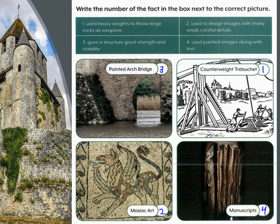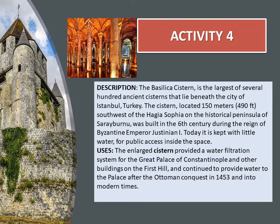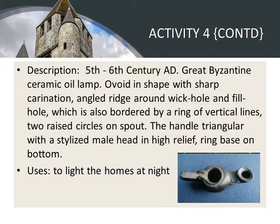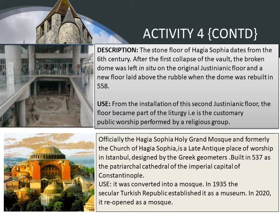Next, you have to write down the number. The pointed arc bridge is the third one — it gives a structure great strength and stability. Please go through this slide and see the answers. Here is Activity 4, children — they have given us four pictures along with descriptions and uses that we need to fill in. I have done each one for you; you can check the answers. Then comes the continuation of Activity 4: picture number 3 with its description, and picture number 4 with its description and uses. Please go through.